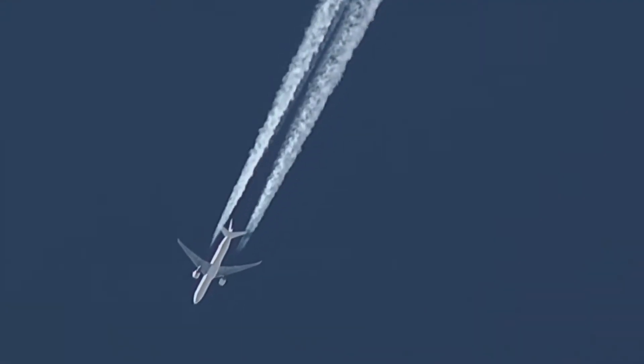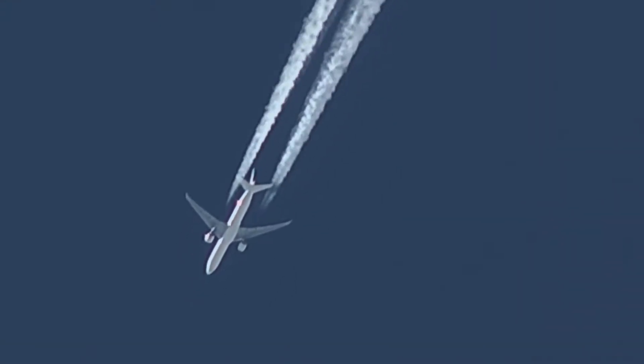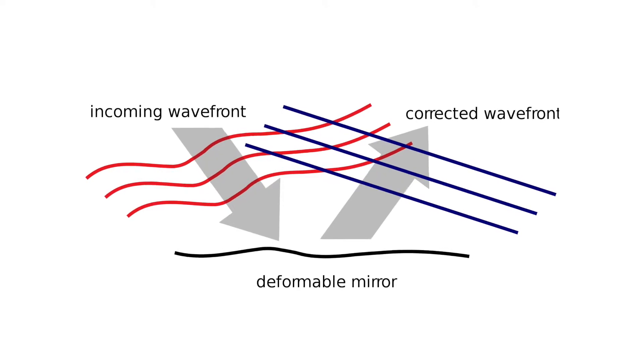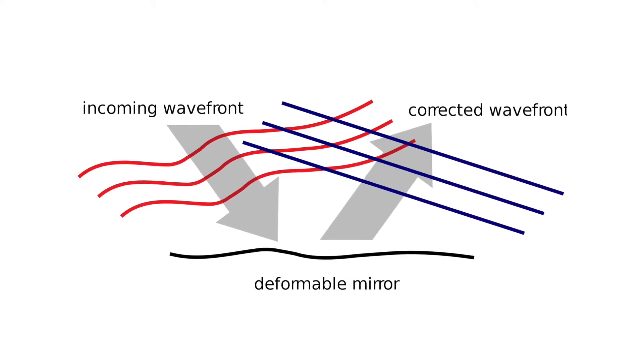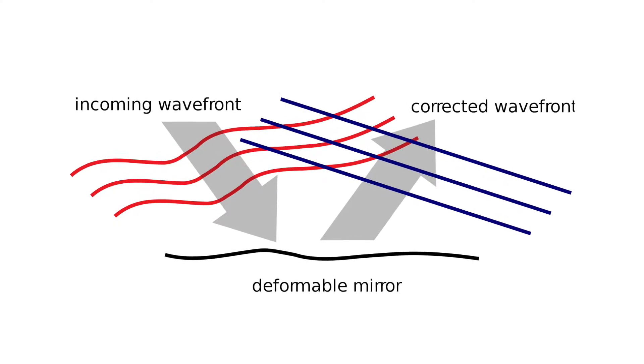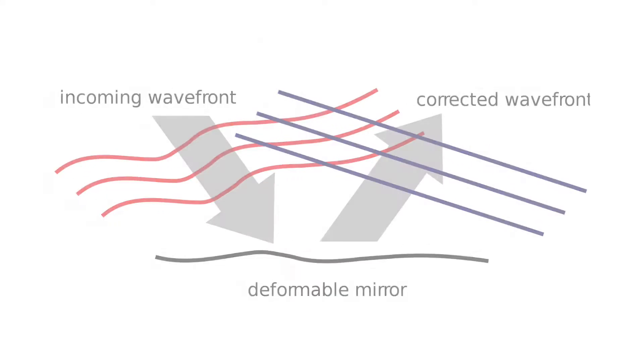The issue is the correction has to happen very fast. The traditional way of adaptive optics is to use deformable mirrors — mirrors that are thin in thickness and have little pistons attached. They distort the mirror, which then distorts the wave. They can only go maybe a thousand times a second.